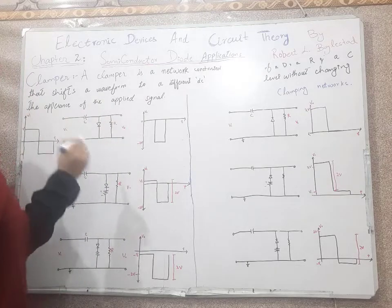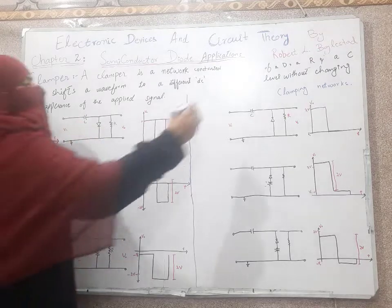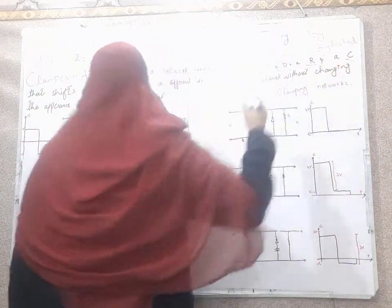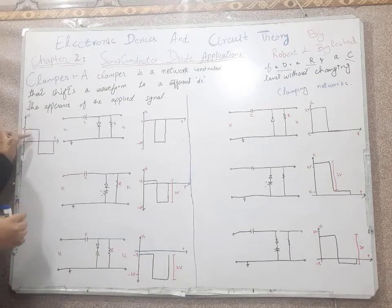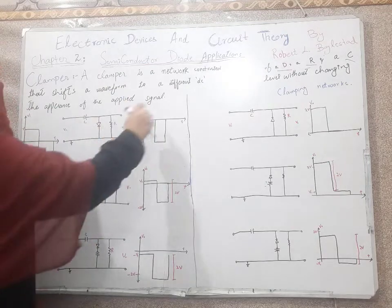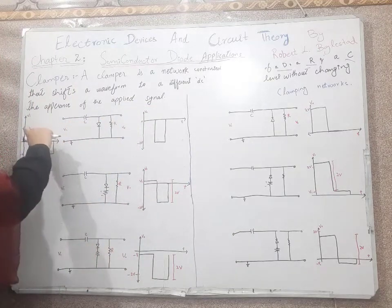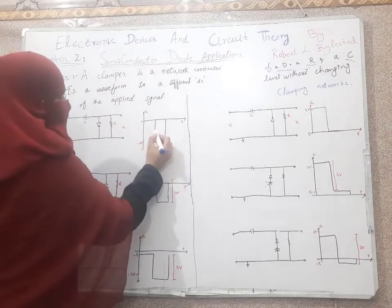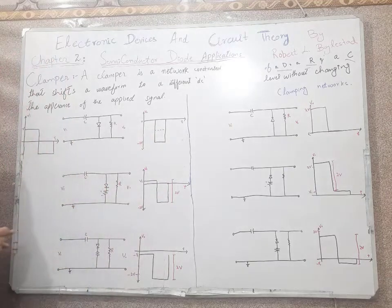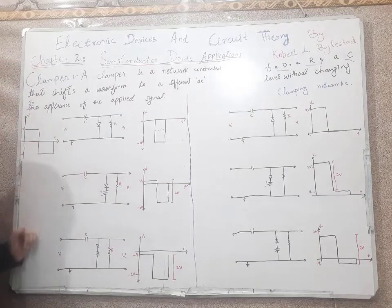The diode shifts a waveform to a different DC level without changing the appearance of the applied signal. This is our clamper circuit, constructed using a capacitor, diode, and resistor. It shifts the waveform to a different DC level — the applied signal appearance is not changed; it remains the same shape.